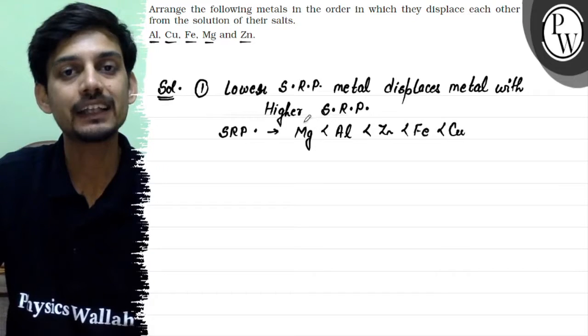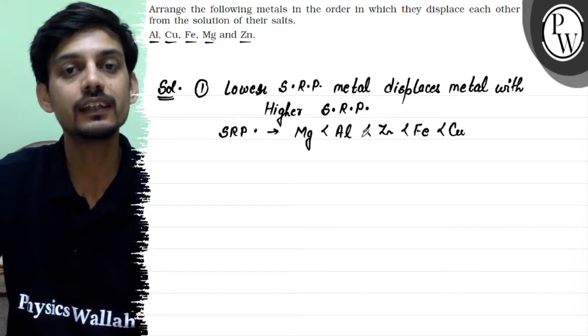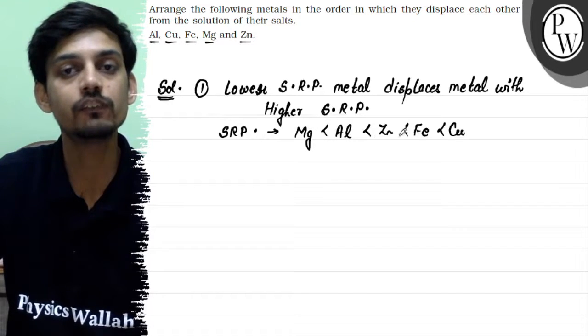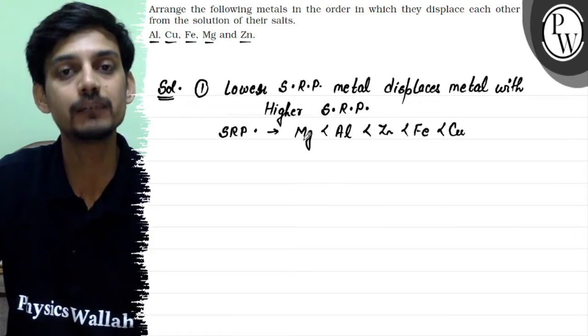That means magnesium is having the lowest SRP and it can displace all the rest four metals. Aluminum cannot displace magnesium.